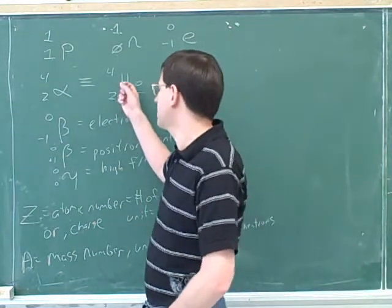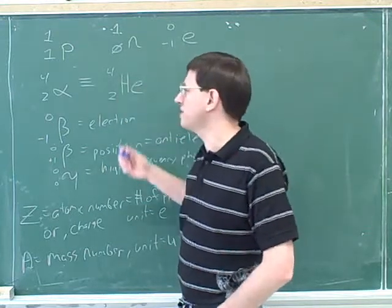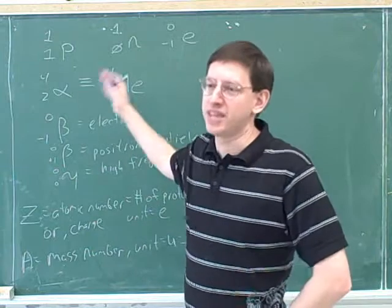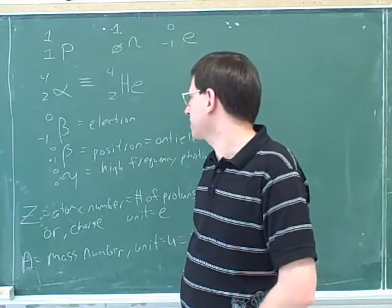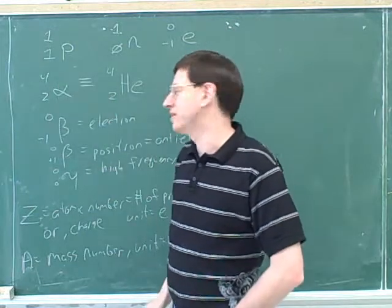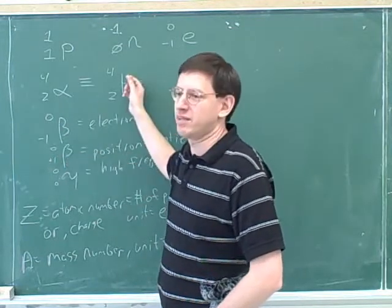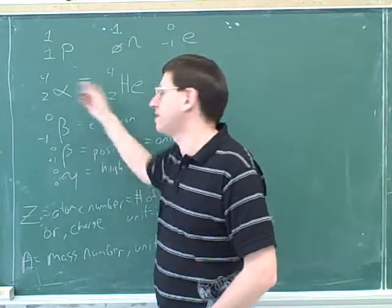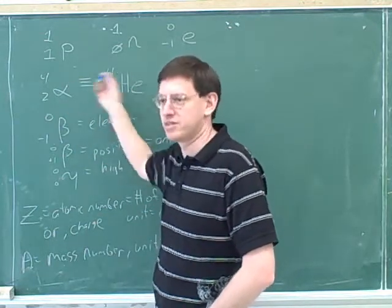Why do we call them alpha and beta instead of just helium and electron? Historically, when scientists — likely Rutherford — were first studying the nucleus, they would bombard samples with particles to see what came out. He detected particles with mass 4 and charge 2, particles that looked like electrons, and others still — but at the time he didn't know they were helium or electrons. The only reason we have two sets of names is because when these were first discovered, scientists didn't yet know what alpha particles were, and now students have to learn both sets of names.